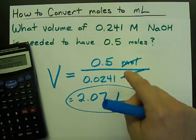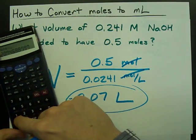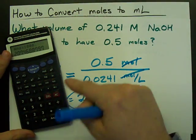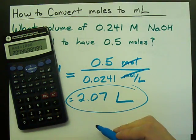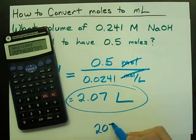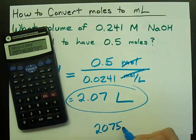If you're looking for the number of milliliters, you have to multiply that by 1,000. This one turns out to be 2,075 or 2,070 milliliters.